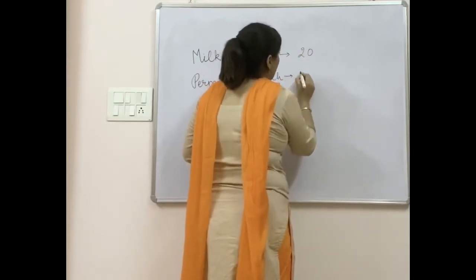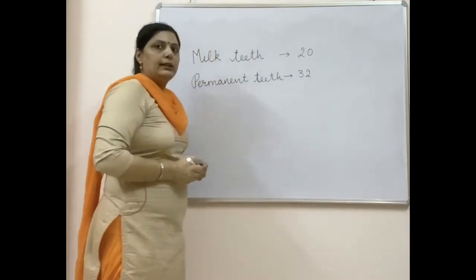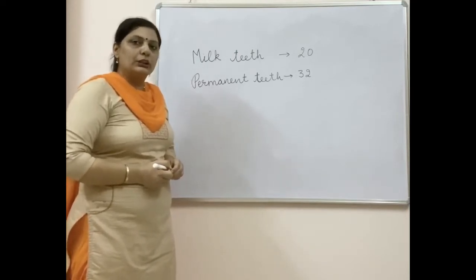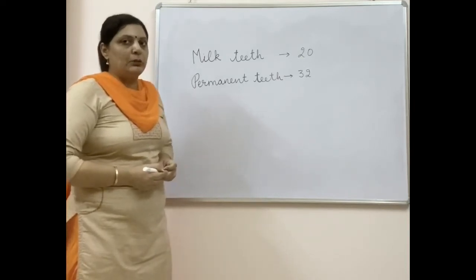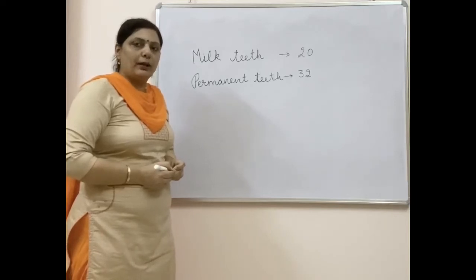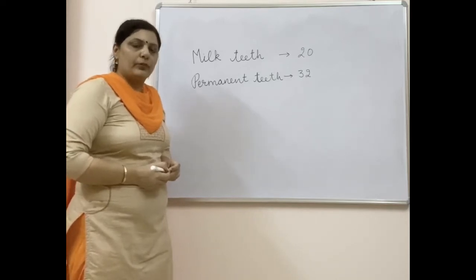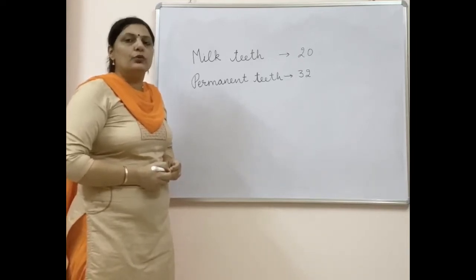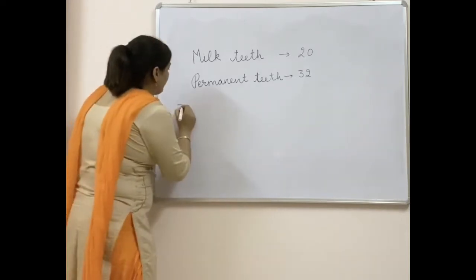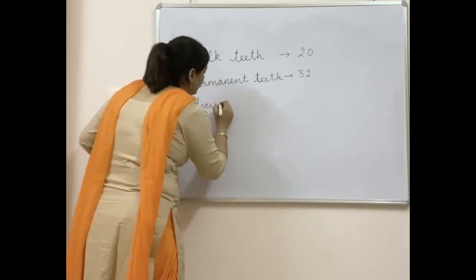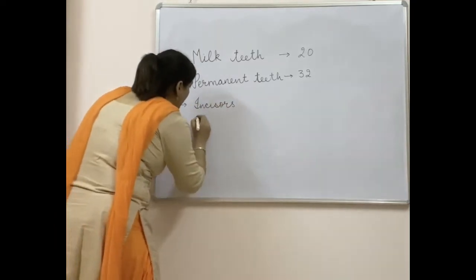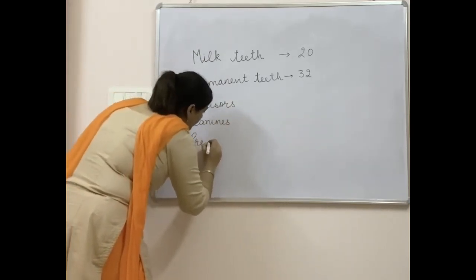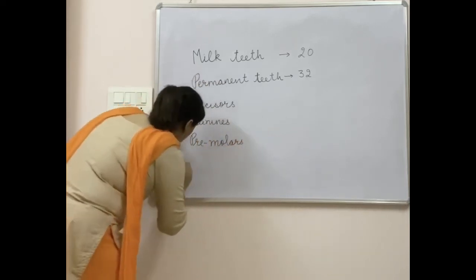All teeth are not similar — the basic structure of each tooth is the same (enamel, dentine, and pulp cavity), whereas their function is different. On the basis of function and outside structure, all teeth are categorized into four main categories: incisors, canines, pre-molars, and molars.